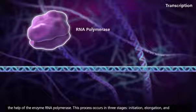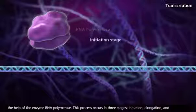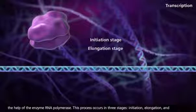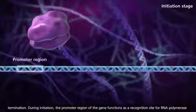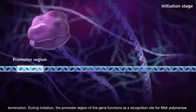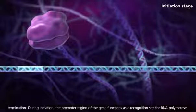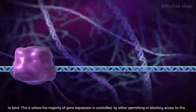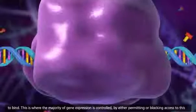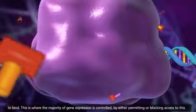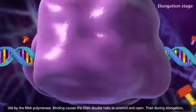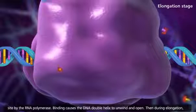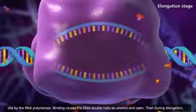This process occurs in three stages: initiation, elongation, and termination. During initiation, the promoter region of the gene functions as a recognition site for RNA polymerase to bind. This is where the majority of gene expression is controlled, by either permitting or blocking access to this site by the RNA polymerase. Binding causes the DNA double helix to unwind and open.